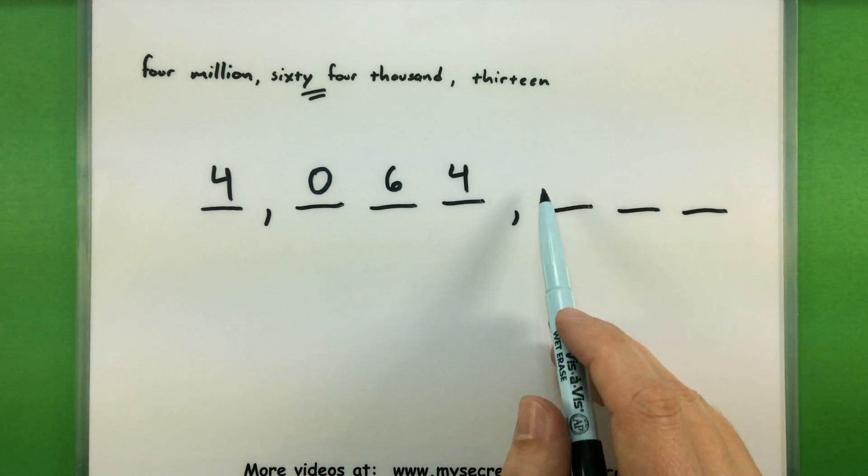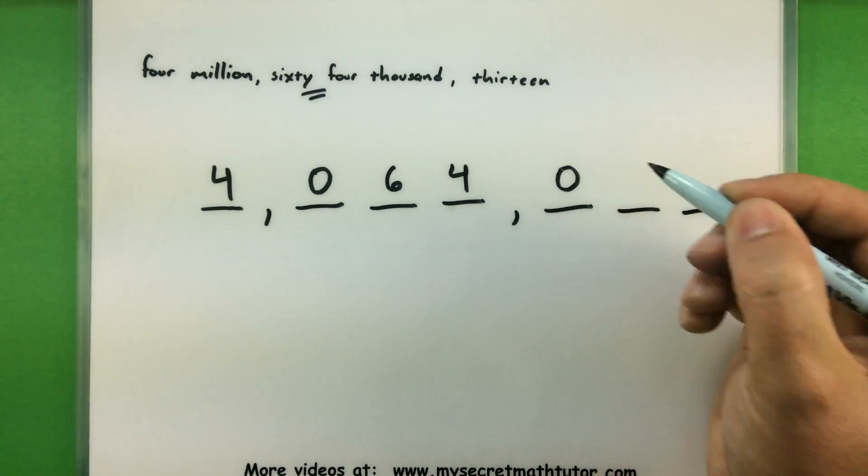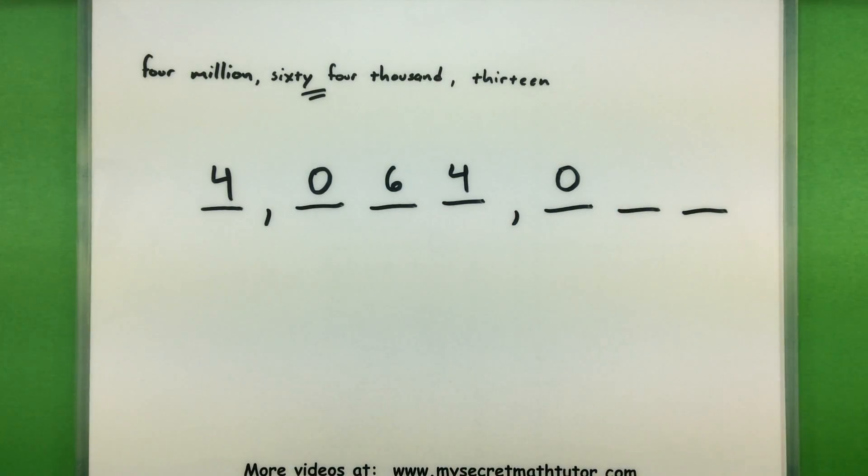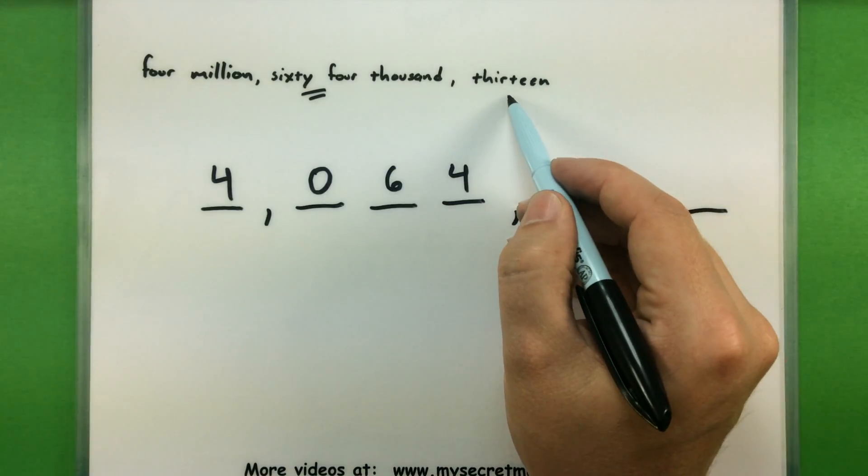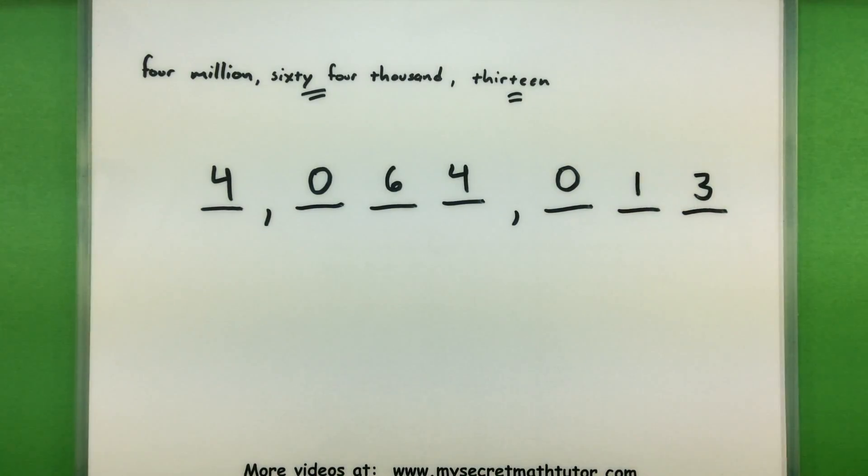Alright, moving on. No hundreds are identified. So we'll put in a zero place value for that. And now I have my tens place. It doesn't look like there's any tens. Oh, but wait a minute. The number 13 will take up two spots. So I'll just have 13.